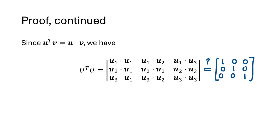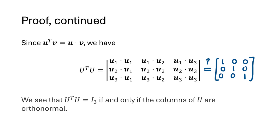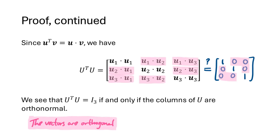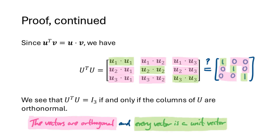This three by three matrix resembles our grid of dot products from the previous example. The set of vectors is orthonormal if and only if U transpose U equals the three by three identity matrix. The pink dot products being zero represents orthogonality, and the green dot products being one represents that every vector is a unit vector. That proves the theorem in this case.